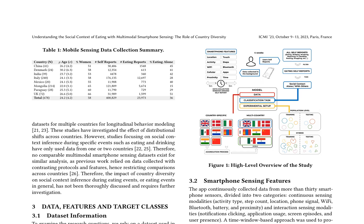In this study, the authors explore the role of country diversity in social context inference during eating events using multimodal smartphone sensing. They utilize a dataset collected over a four-week period in November 2020, aimed to understand the everyday behavior of college students across eight countries. The dataset includes demographic information, user-reported activities, location, social context, and mood.